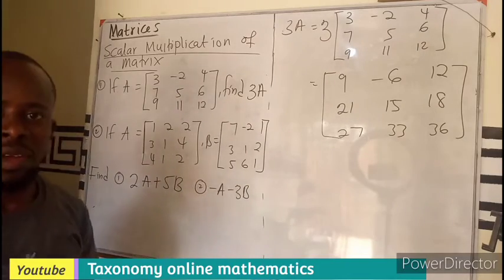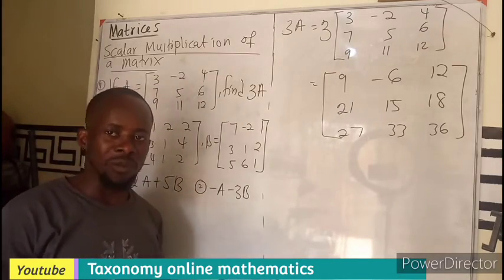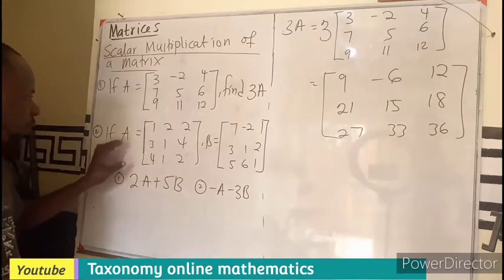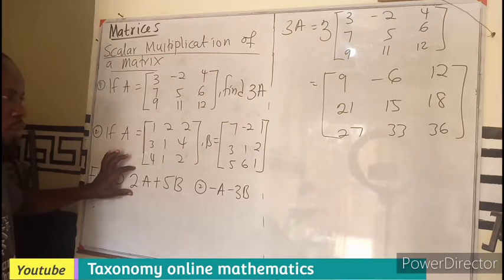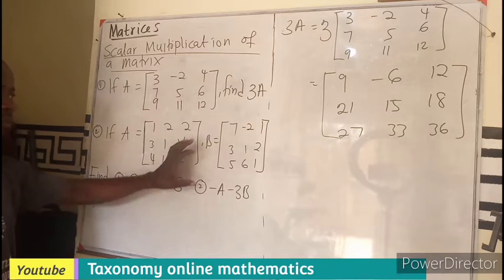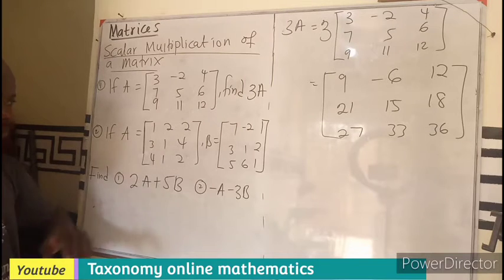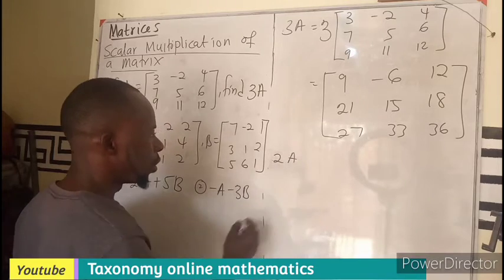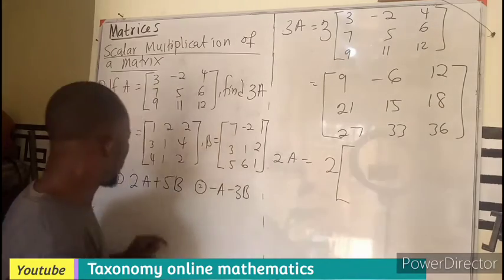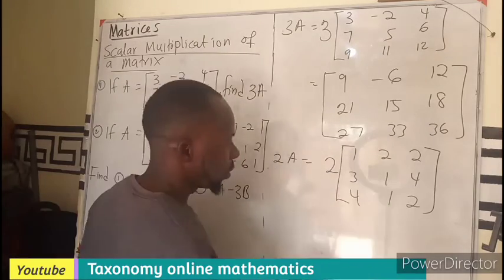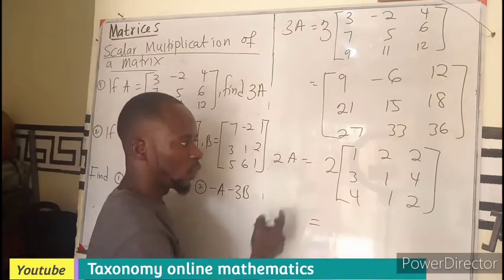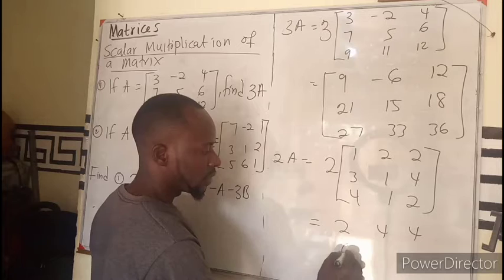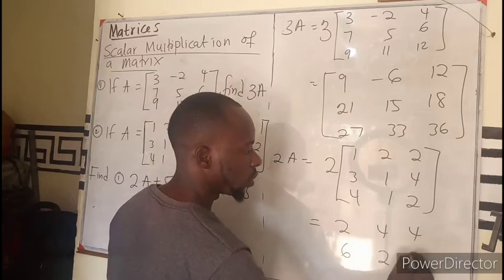So this is what we are going to get by multiplication of matrix A by 3. The second one is also 3 by 3. We have to find 2A plus 5 multiplying B. So in that case, 2A - per multiplication, you'll be having [2, 4; 4, 4, 6; 2, 8].